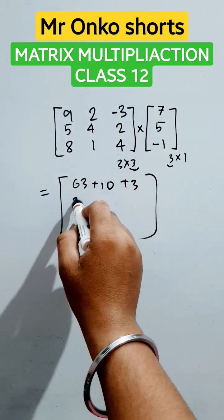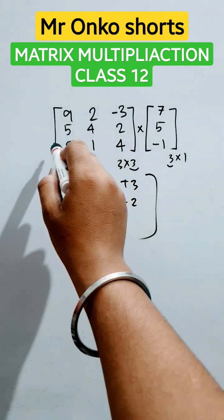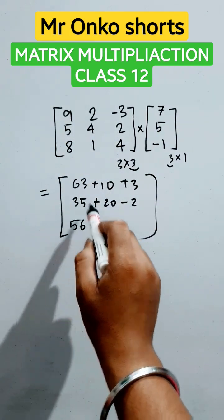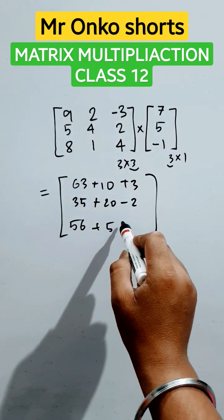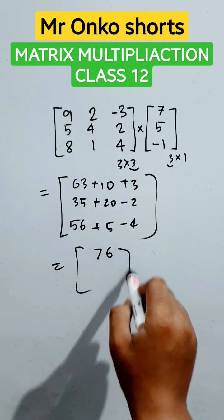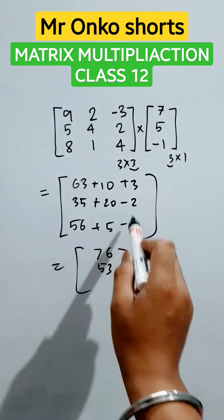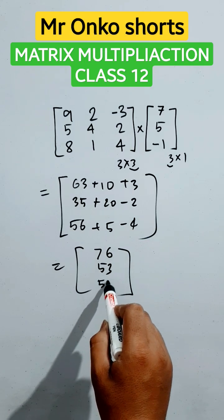Now this will be multiplied by this, that is 35 plus 20 minus 2, and now here this into this, that is 8, 5, 6 plus 5 into 1, 5 minus 4. So the answer is 73 plus 3 that is 76. This is 55 minus 2, 53, and this is 61 minus 4 that is 57.